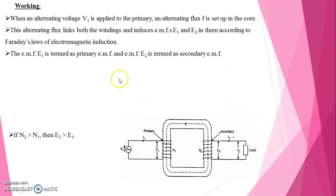In the working of transformer, when an alternating voltage V1 is applied to primary, an alternating flux phi is set up in the core. This alternating flux links both windings and induces EMFs E1 and E2 in them.